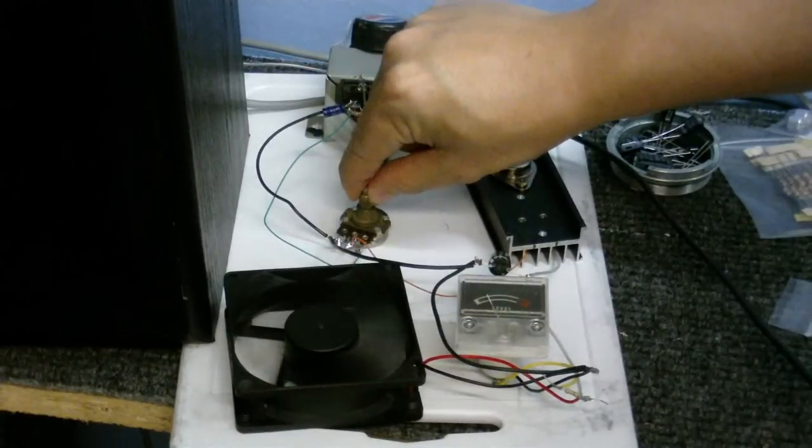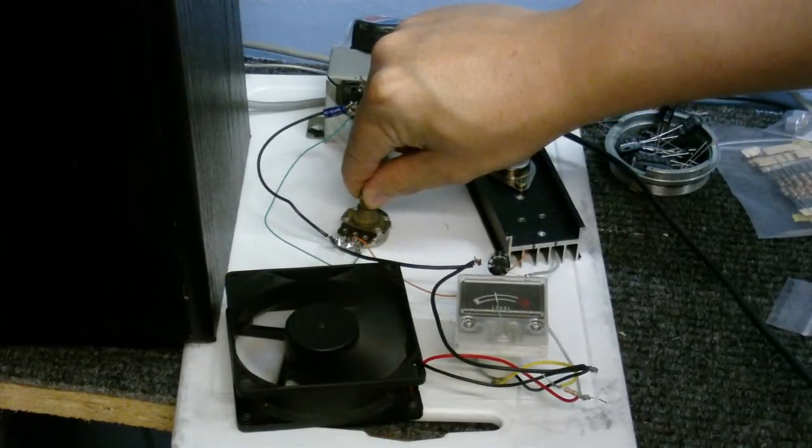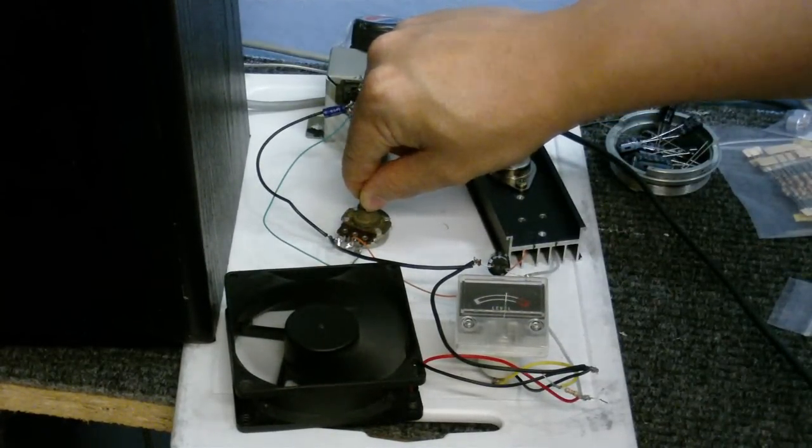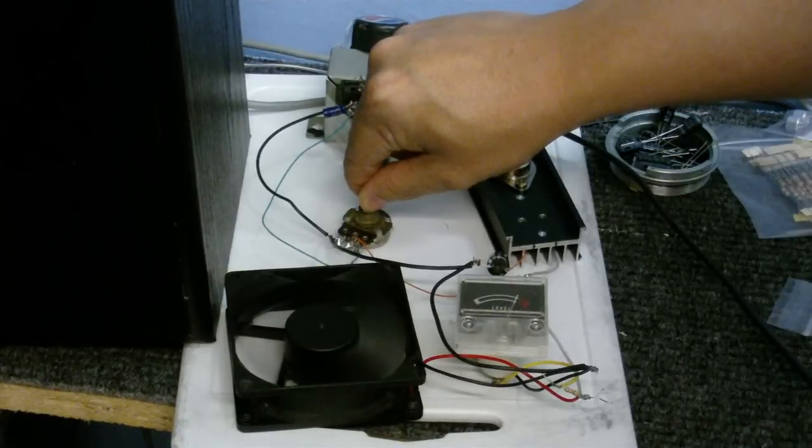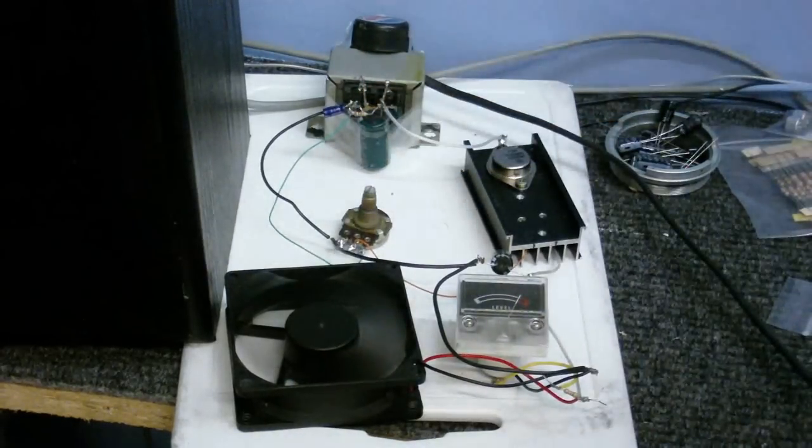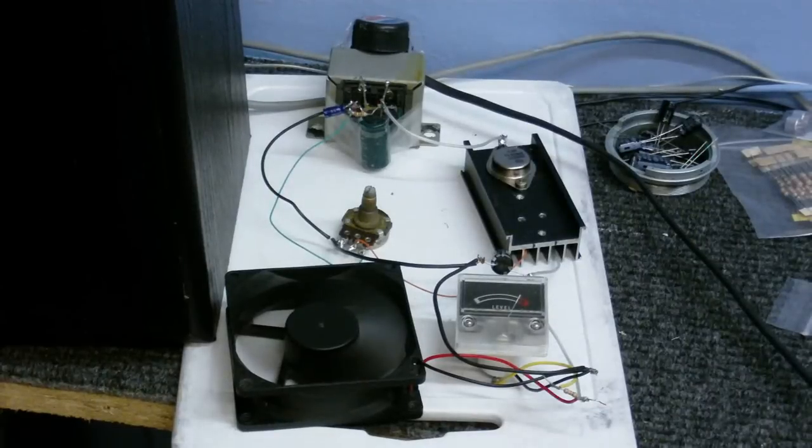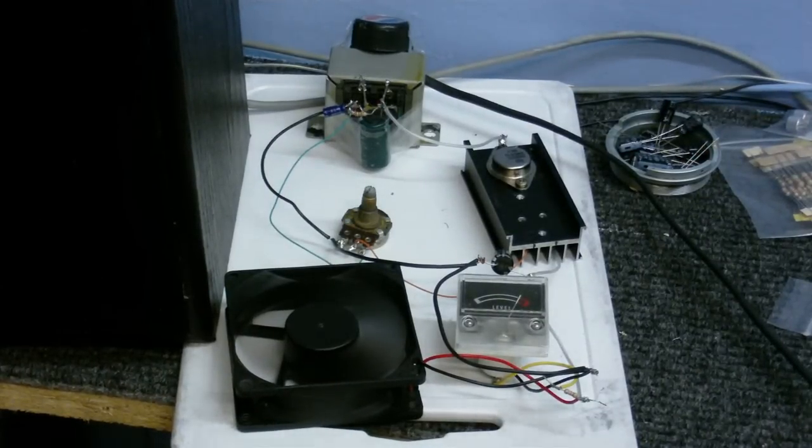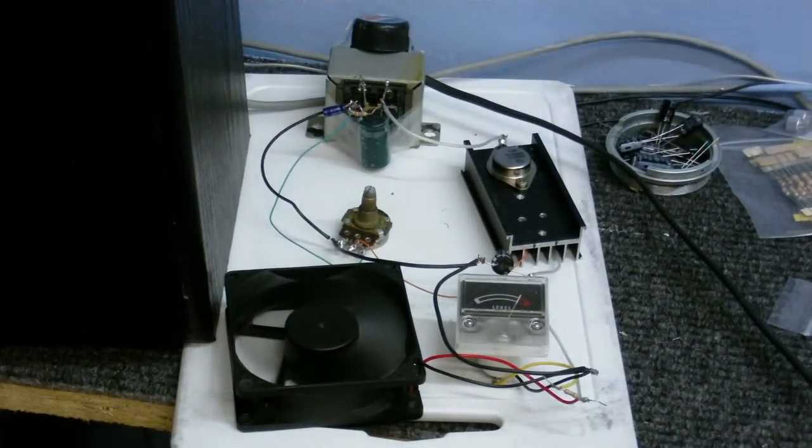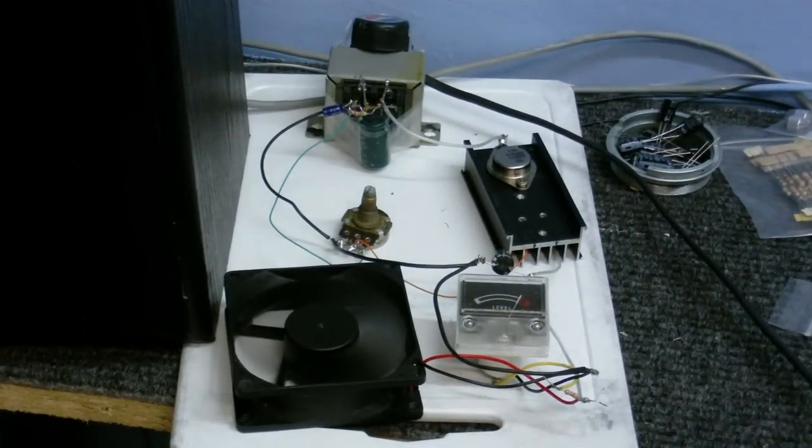You see the meter start to twitch and soon it'll be high enough to start the fan turning. I can keep increasing the voltage. As you see the meter goes up further and further and the fan gets faster. Now it's on the maximum voltage and I don't exactly know what that is, somewhere around 13 volts.